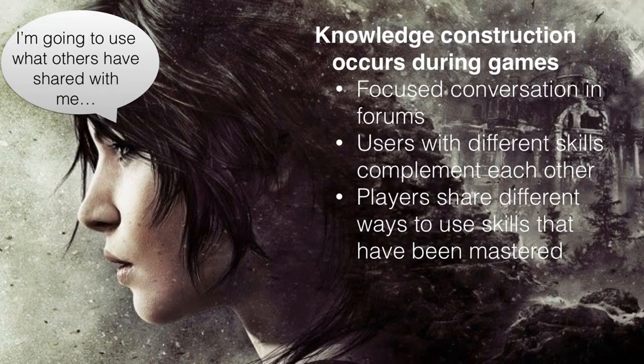Knowledge construction occurs during games. Gamers use what others have shared — if you play a game on your phone, you've likely googled how to get through a level, how to spell the right word, or tips and tricks — communicating with other players. The largest wiki on the internet is Wikipedia. The second largest wiki is the World of Warcraft wiki. Think about that: the two largest online encyclopedias are Wikipedia and World of Warcraft wiki, because very focused conversations occur there on specific topics.